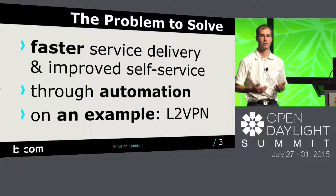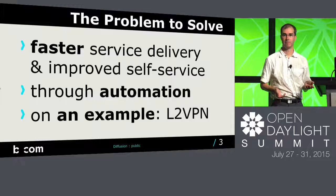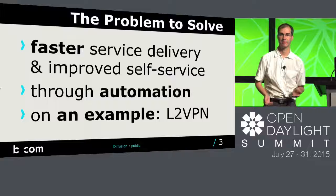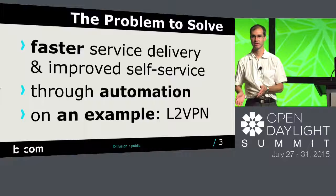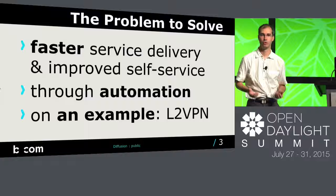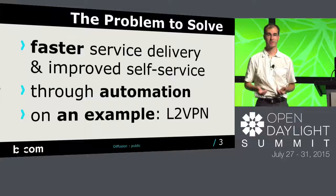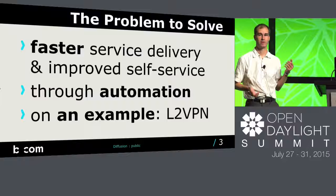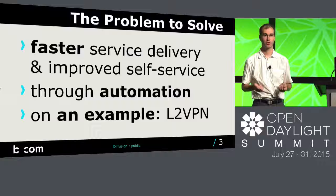Today, when you're a network operator and you want to deploy a new service for a client, it takes a lot of time — it can take several days — because there are lots of manual procedures. The client has to contact a salesperson at the operator, then the operator passes the order to the technical services, which have to allocate and manage resources, plan operations, and then execute them. If we want to go faster, we have to automate things. Faster service delivery improves the self-service experience, because the client can order its service through a self-service portal and get feedback a few minutes later.